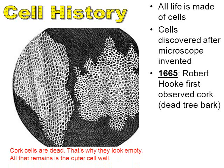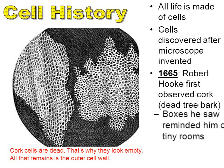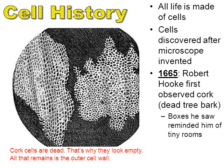Notice that the cells he drew all appear to be empty. This is because cork cells are dead — all he was looking at is the outer cell wall of the plant cells. The inner parts had long since decayed and decomposed. When Robert Hooke first observed cork, he had no idea that cells were alive. He saw these little boxes that reminded him of tiny rooms, and another name for a tiny room would be a cell — and so the name has stuck.